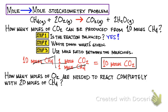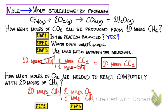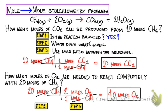Here's another example: how many moles of oxygen gas O2 are needed to react completely with 20 moles of CH4? Our starting point is 20 moles of CH4. Set up the dimensional analysis and mole ratio so that the moles of CH4 cancel out. So 20 moles of CH4 will react completely with 40 moles of oxygen gas — 20 times 2 divided by 1 equals 40 moles of oxygen gas.